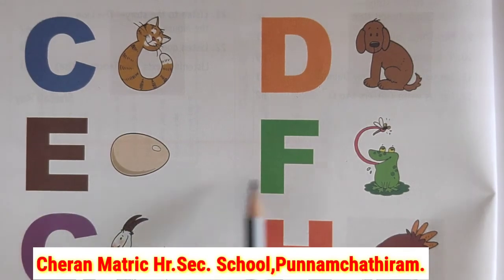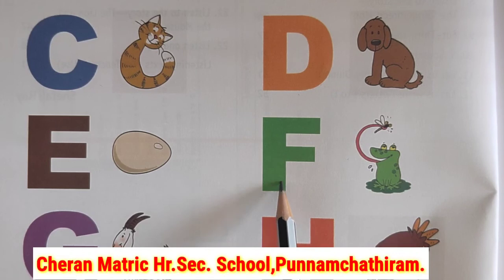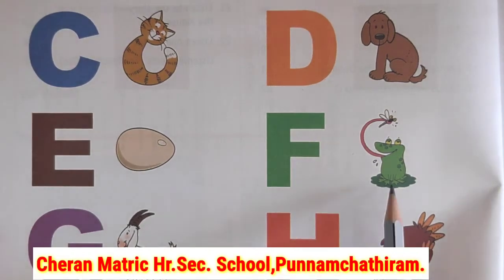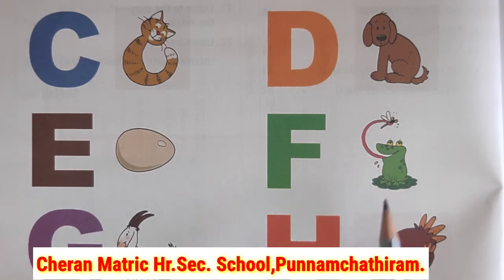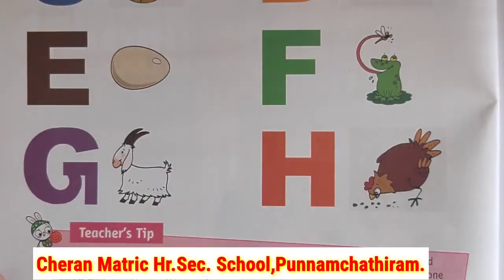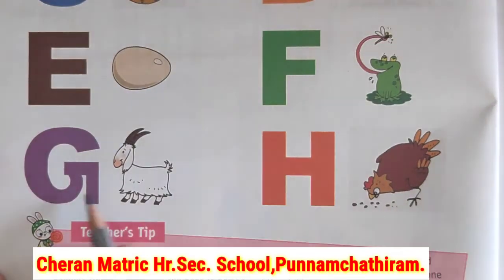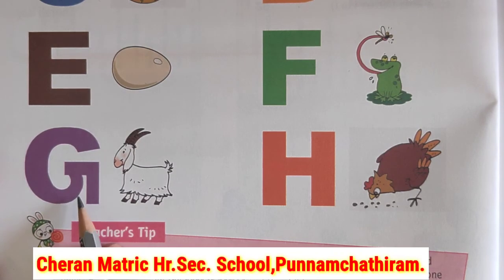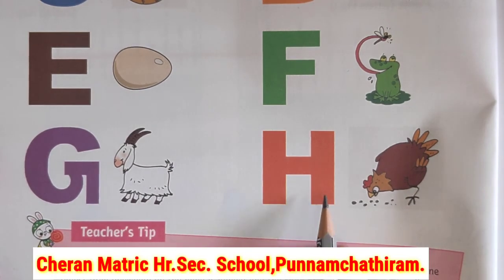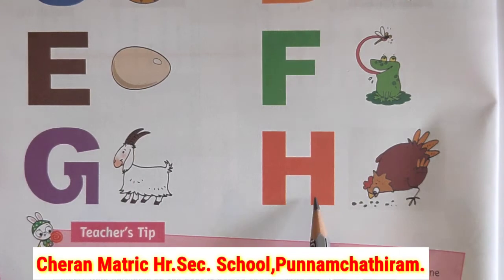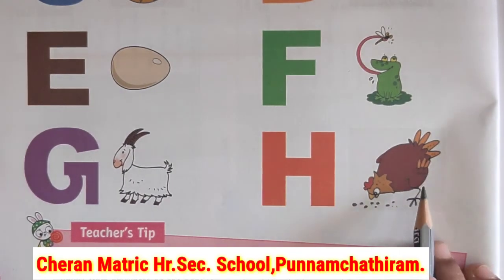E after capital F. F, frog. F after capital G. G, goat. G after H. H, hen. End.